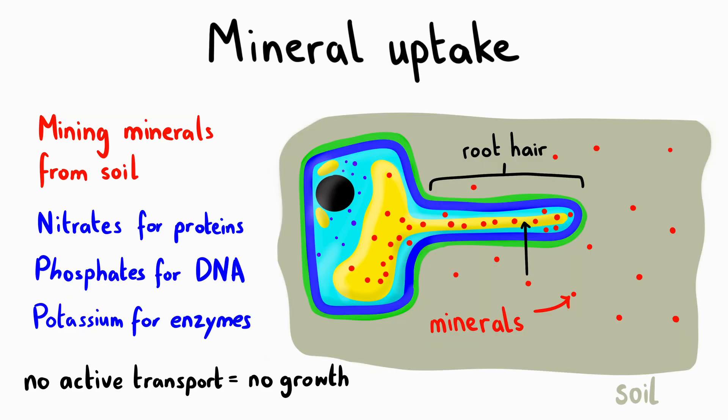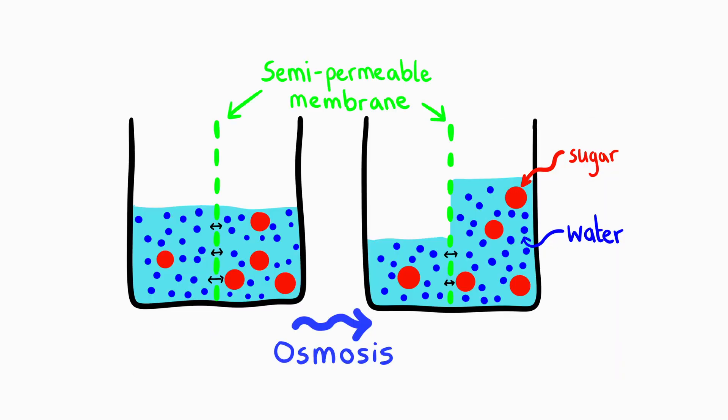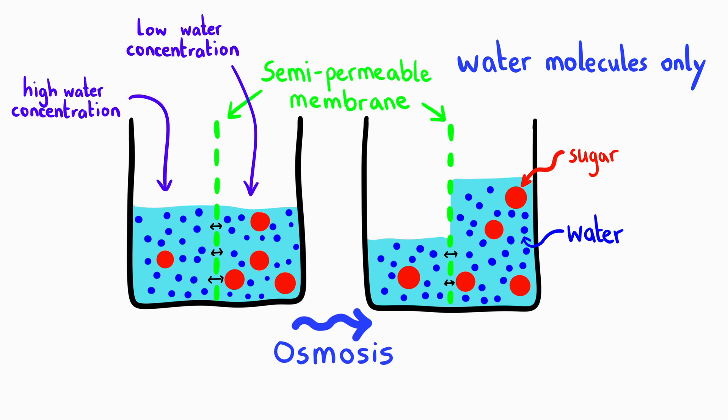And finally, we'll look at specific examples of active transport in plants and animals. Let's begin with understanding osmosis. Osmosis is a specific type of diffusion that involves the movement of water molecules across a partially permeable membrane. Water moves from a region of higher water concentration to a region of lower water concentration.